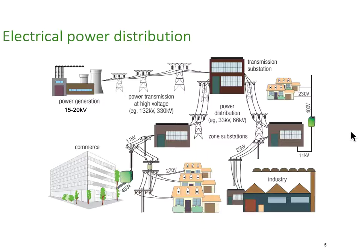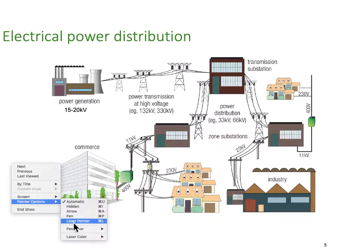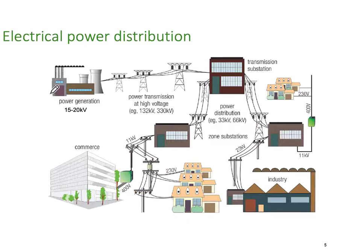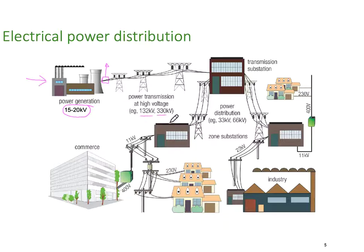Let's have a close look at this electric power distribution diagram. We're going to start over here with generators. Generators could be coal-fired steam generators, solar, hydro, or wind — there are lots of ways to generate electricity. Typically, those generating plants generate at about 15,000 to 20,000 volts. As they come out of the generation plant, they have a step-up transformer, stepping the voltage up to 132 kV or quite often 330 kV, and we transmit it through those large towers across the landscape to large distribution substations.